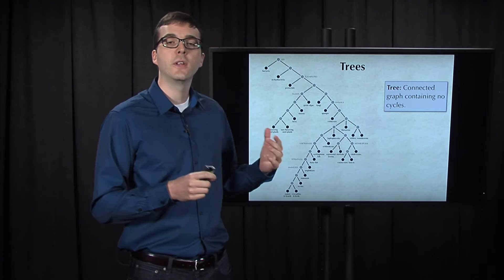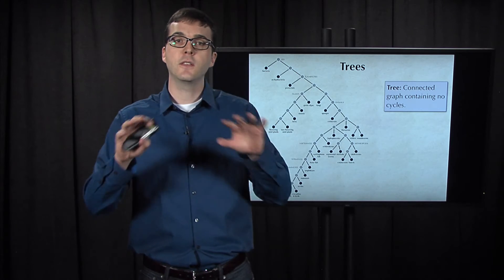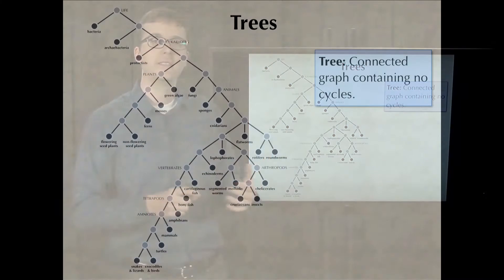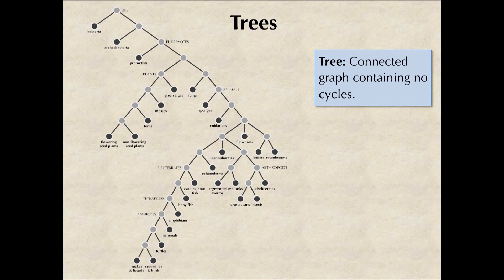Now you may have noticed that evolutionary trees take the shape of a graph. So we'll define a tree as a connected acyclic graph. Because a tree is connected, it means that it holds the tree in one piece. And because it's acyclic, it means that the tree can branch out without growing back in itself and forming a cycle.